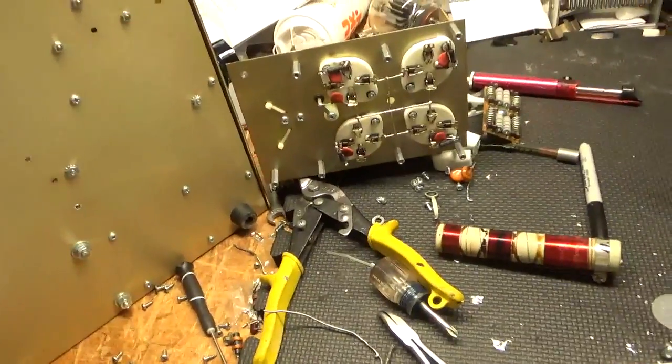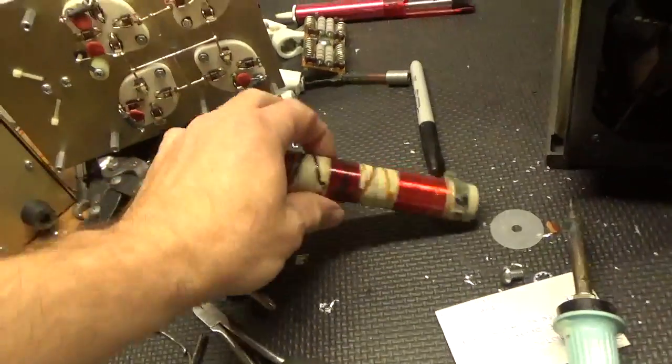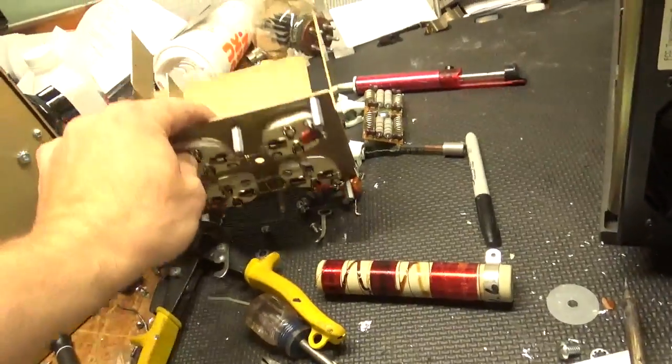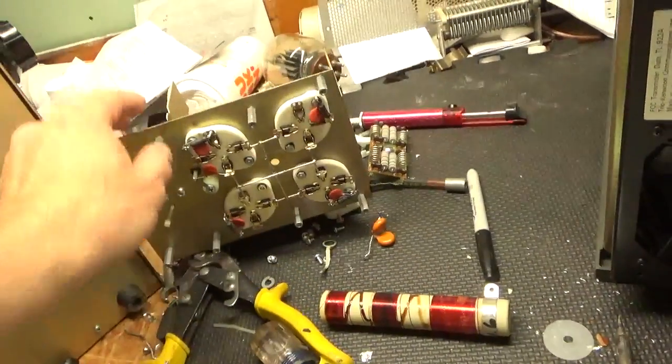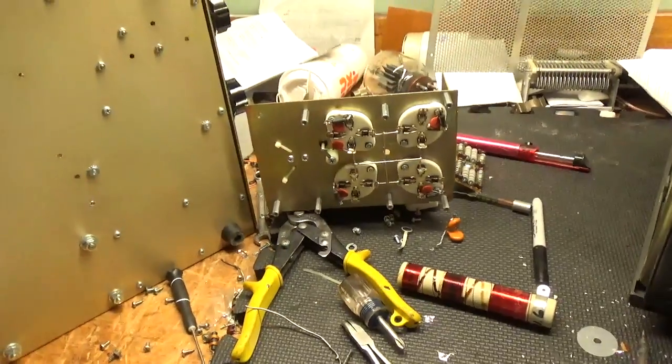A guy had 811 tubes in it, he had a failure. This became resonant, he had an oscillation at one point, took out some other components.